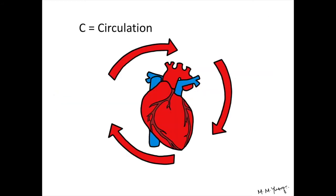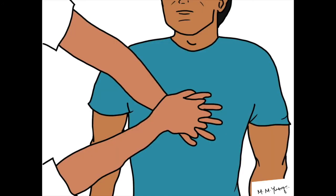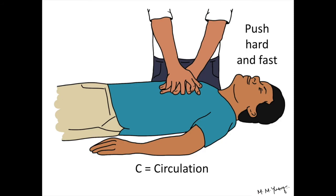C is for Circulation. It is the flow of oxygenated and deoxygenated blood around our bodies and it's controlled by the heart. When our heart stops functioning properly, we can manually take over this role by pushing down hard and fast on the chest. Start by placing the palm of one hand at the centre of the person's chest. Place the other hand on top and interlock your fingers as shown. Keep your arms straight and push down hard and fast on the chest, letting the chest come back up fully each time.